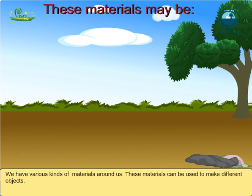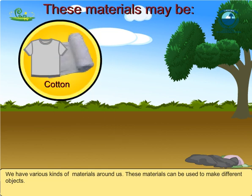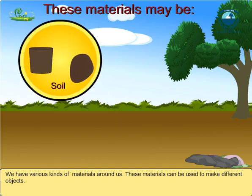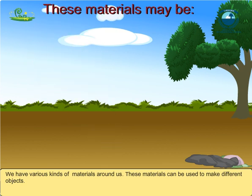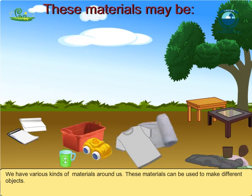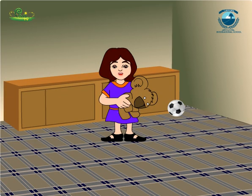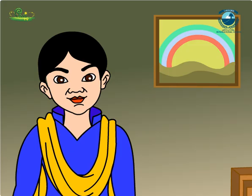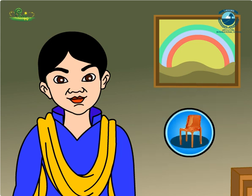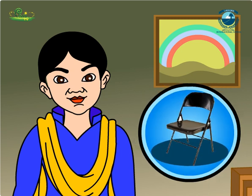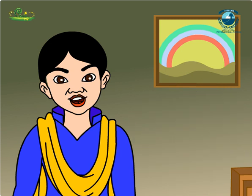These materials can be used to make different objects. These materials may be wood, plastic, cotton, paper or soil. Can you imagine the world without these materials? Can we use different materials to make the same object? Of course! See, we have chairs — one of wood, one of plastic and one of metal. So we can use various materials to make an object.